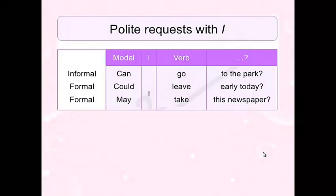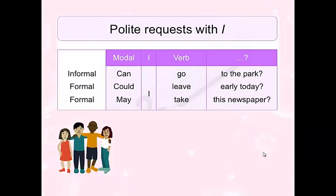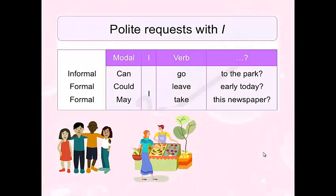Of course you know those words and I'm sure you use them, but let's be really sure about when to use them. The first one is 'can' — we use 'can' in more informal situations, for example with your family or with your friends. The second one is 'could' — we use 'could' in more semi-formal situations, such as with your colleagues, people you work with or study with, or a salesperson in the store — someone you may or may not know well.